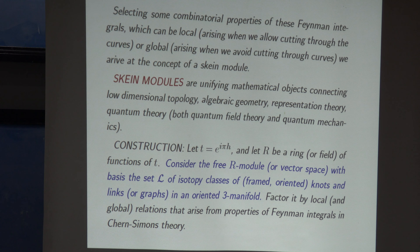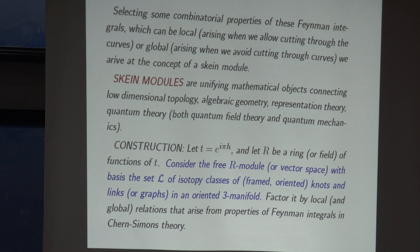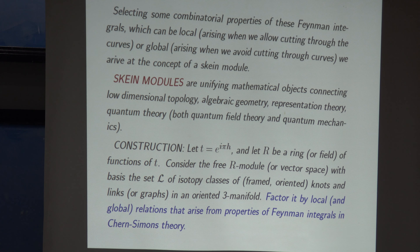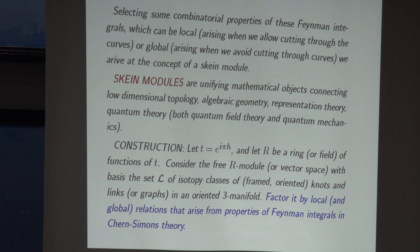When particles collide you have to introduce graphs as well, yielding other skein modules. You consider algebraic structure based on geometric objects - algebraic topology based on knots and links - and then make it smaller, exactly like in homology theory. You factor it by relations that arise from properties of Feynman integrals in Chern-Simons theory.